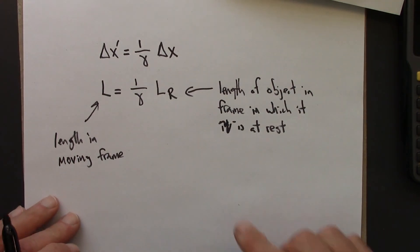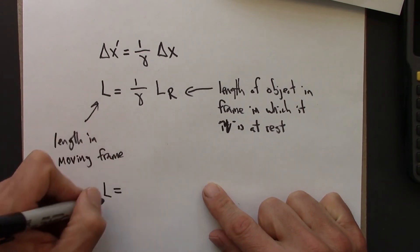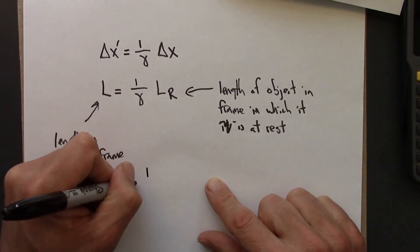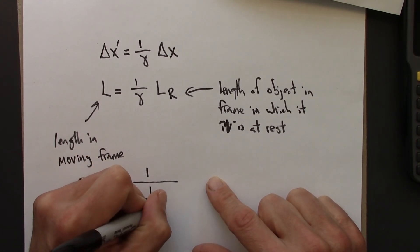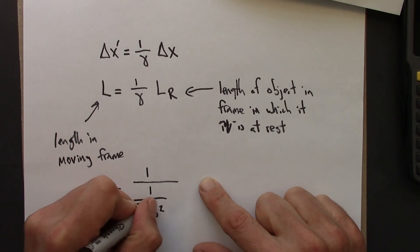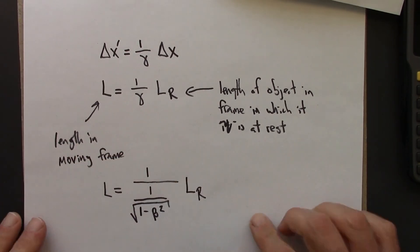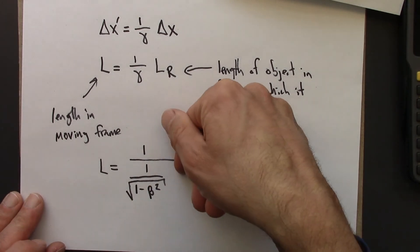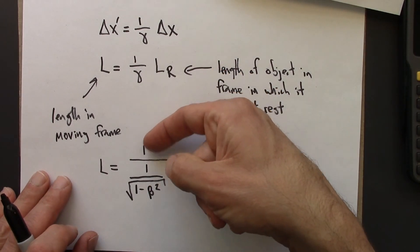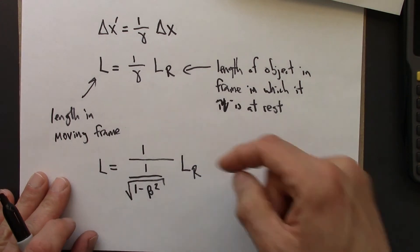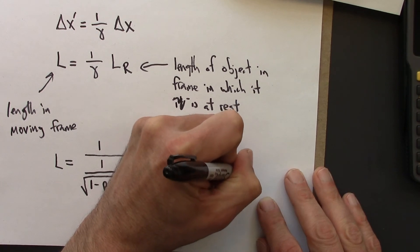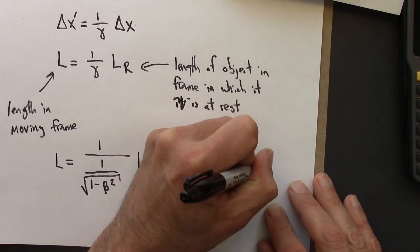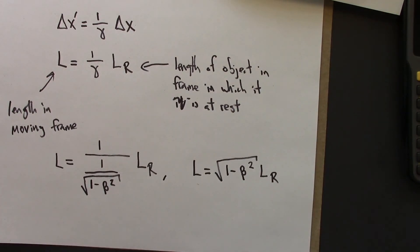I'm just going to copy this down, but I'm going to plug in for gamma. Gamma is 1 over square root of 1 minus beta squared. And so you can simplify this compound fraction. 1 over 1 over blah is just blah. And so then you could write this as L equals square root of 1 minus beta squared times L_R. So these are two formulas for Lorentz contraction.